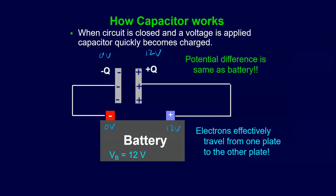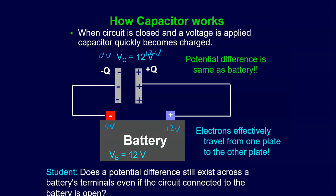A student asks: does a potential difference still exist across the battery's terminals even if the circuit connected to the battery is open? The answer is yes. The battery is a mechanism designed to maintain a potential difference - it doesn't matter how it does that. Essentially it moves charges around to keep that potential difference.